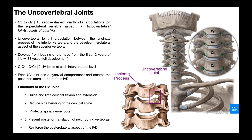Function two: it reduces side bending of the cervical spine — lateral flexion, like taking your ear to your shoulder. Limiting this protects the spinal nerve roots. If you laterally flex to the right too much, the right intervertebral foramen narrows, potentially compressing the right spinal nerve root at that level. The same applies laterally flexing too far to the left — it narrows the left intervertebral foramen and can compress the left spinal nerve root.